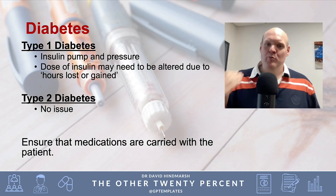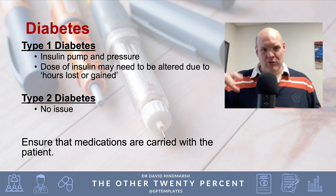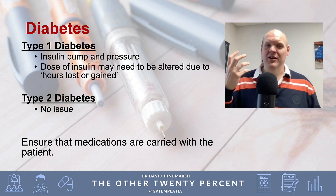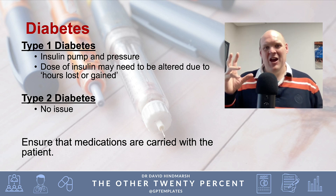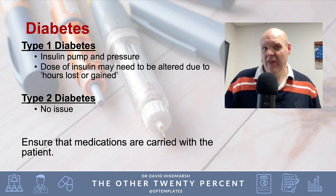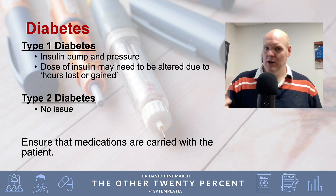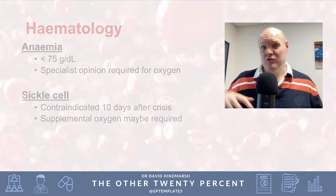For diabetes, make sure medication — especially insulin — is carried in hand luggage so it isn't lost. Be mindful that Type 1 diabetics or those with an insulin pump may need to check with the manufacturer whether their pump is suitable for use at aircraft air pressure. Also remember that travelling east or west means losing or gaining hours, so patients may need to adjust their insulin regime. Type 2 diabetes generally carries no travel restriction, but patients should still keep medications accessible in hand luggage.